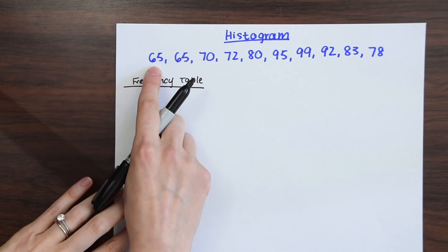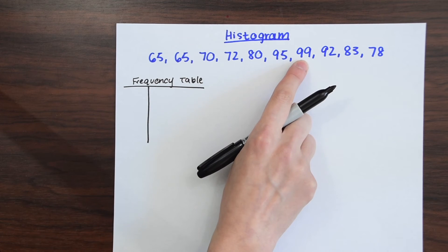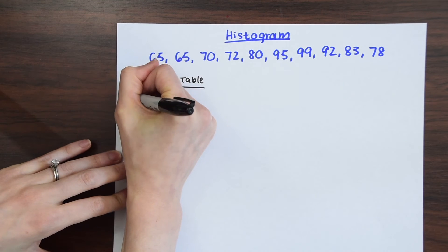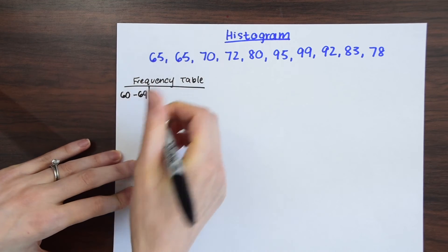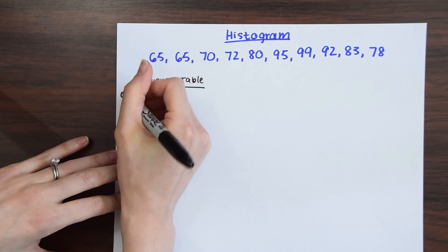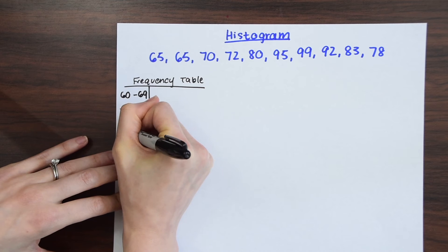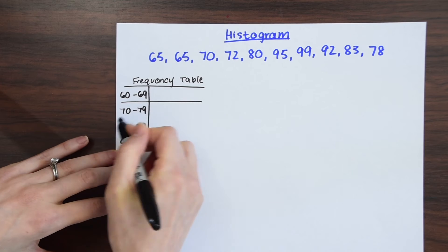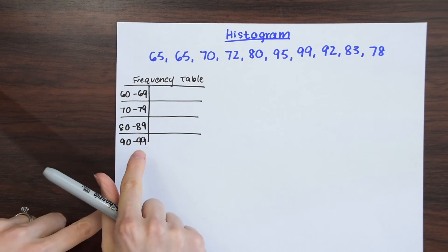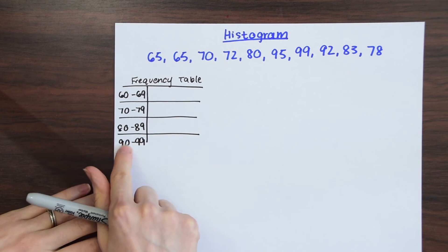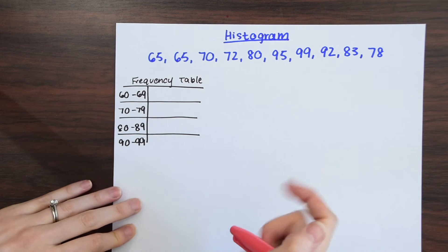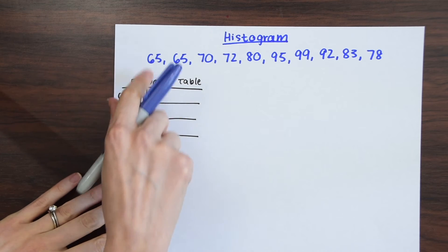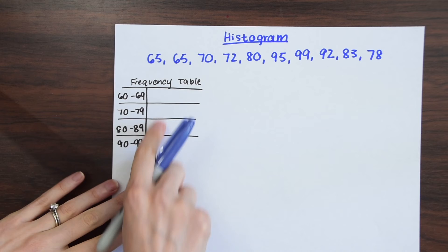Our lowest number is 65 and our highest number is 99. So we're going to work with intervals from 60 to 100. I'm going to start at 60 to 69 and then go up from there: 70 to 79, 80 to 89, and then 90 to 99. If this had a value of 100, we couldn't use these intervals because the last interval includes 99 and not 100. But we don't have to worry about that. Now let's go one by one through each data point and categorize them, placing them into our table.